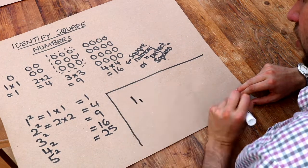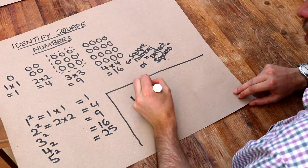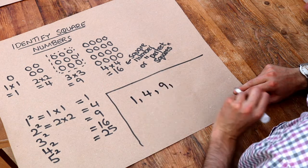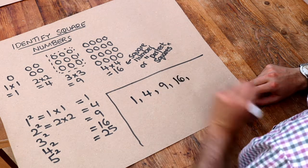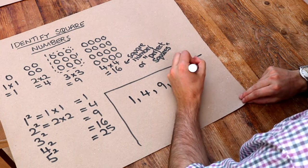One times one is one. Two times two is four. Three times three is nine. Four times four is sixteen. Five times five is twenty-five.